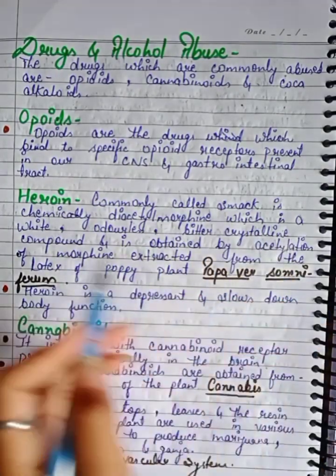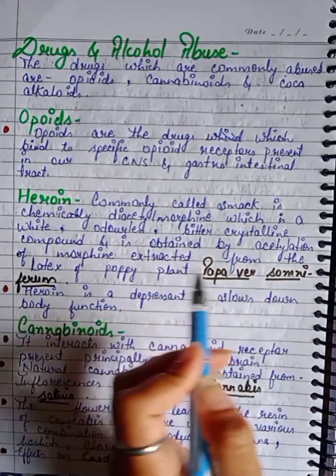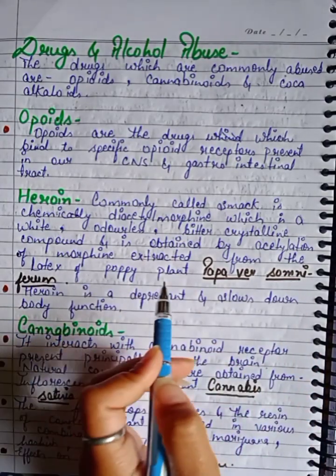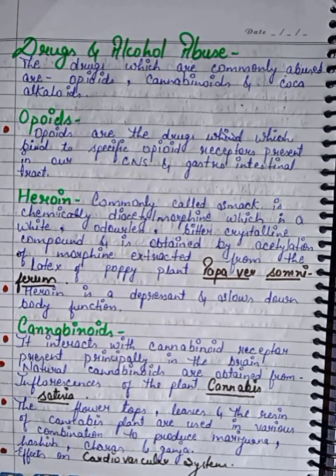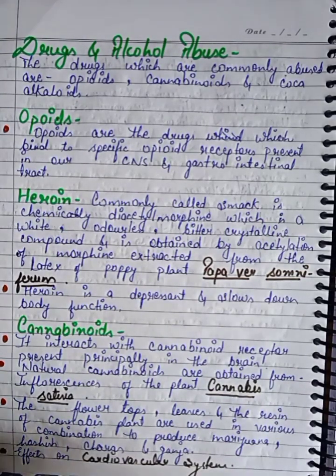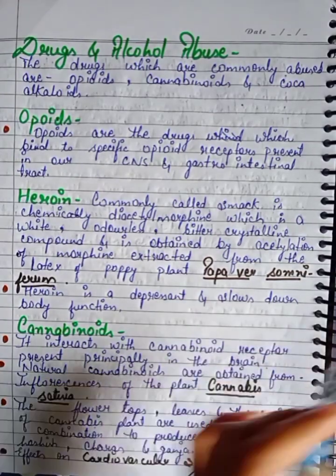Heroin, commonly called smack, is chemically diacetylmorphine, which is a white, odorless, bitter crystalline compound. It is obtained by acetylation of morphine extracted from the latex of the poppy plant. The scientific name of the poppy plant is Papaver somniferum.